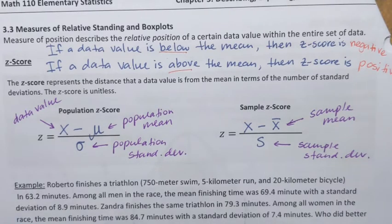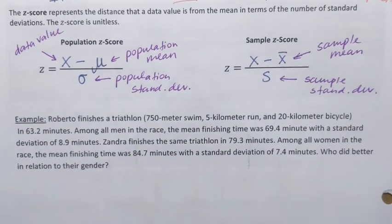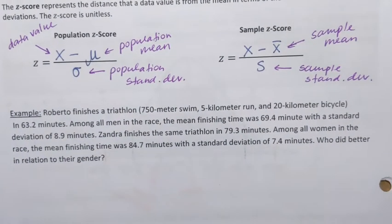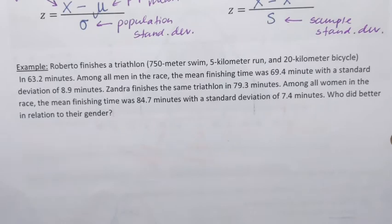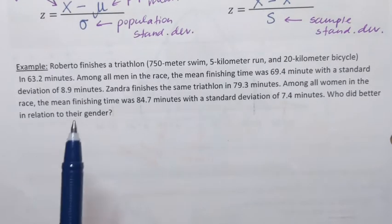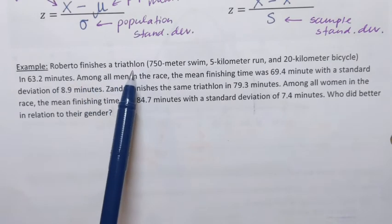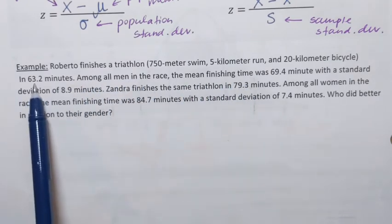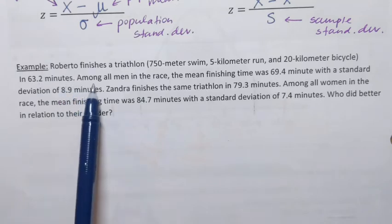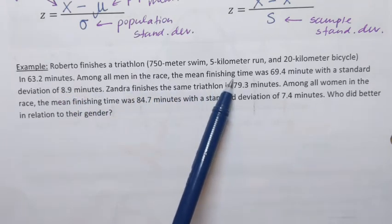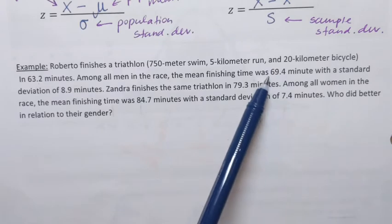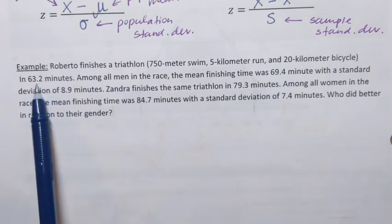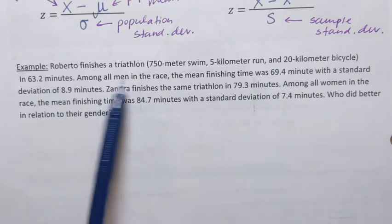Since z-score describes the relative position of a certain data value within the entire set, it actually allows us to compare — like apples and oranges in a sense. So let's read this example. Roberto finishes a triathlon in 63.2 minutes. Among all men in the race, the mean finishing time was 69.4 minutes — that's the average finishing time. So Roberto is actually faster than average.